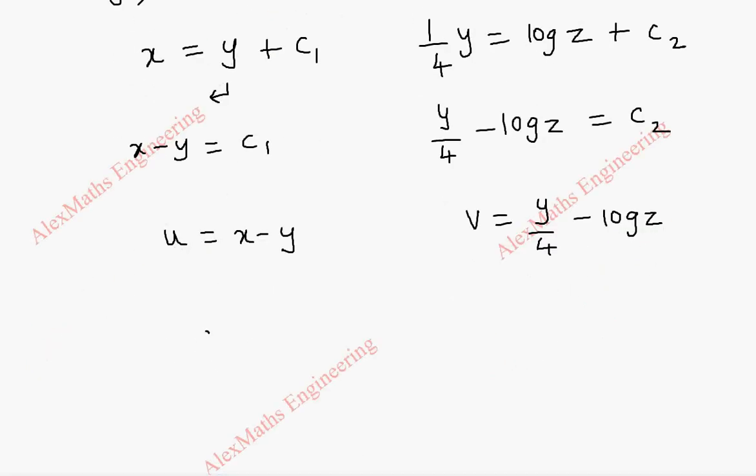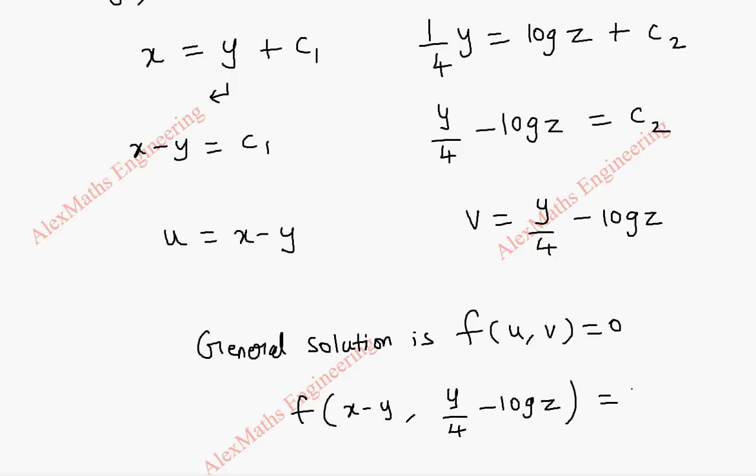We get the general solution. The general solution is f of u comma v equal to 0. Thus we get f of x minus y comma y by 4 minus log z equal to 0.